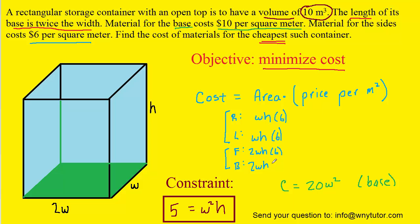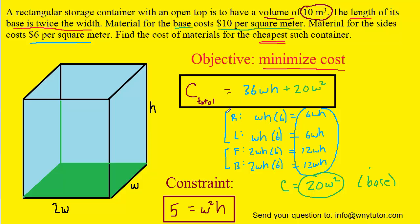And then we multiply by 6 because again that's the price per square meter of the sides. We can simplify these, this becomes 6wh, as does this, and then the latter two become 12wh. So to get the total cost we simply have to add up the four sides to the base. And when we do that we can see we get a total cost equal to 36wh plus 20w squared.